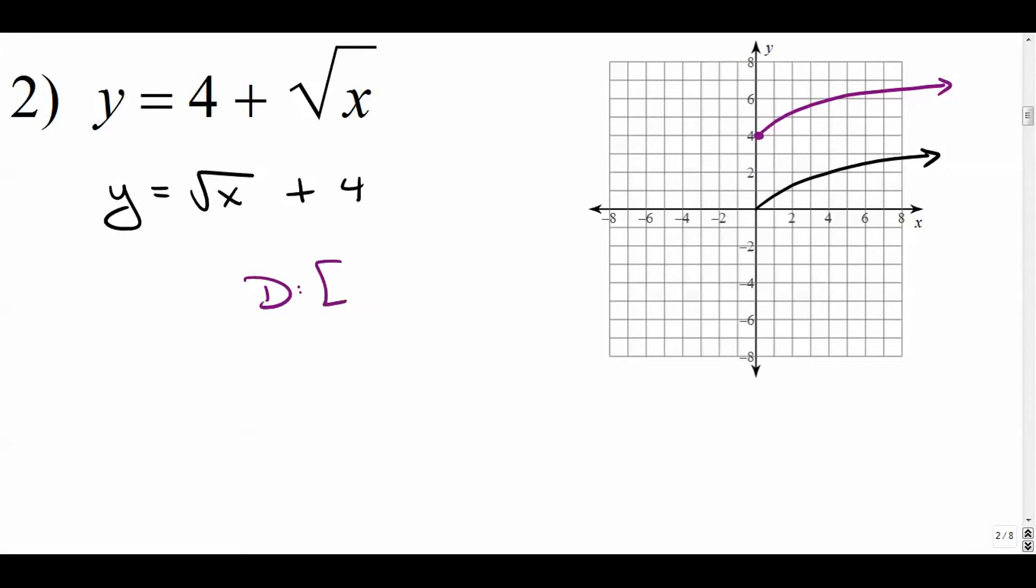So it looks just like the parent except up 4. So the domain is the same, and the range is shifted up 4. It starts at 4 and goes on forever. Alright, so let's continue.